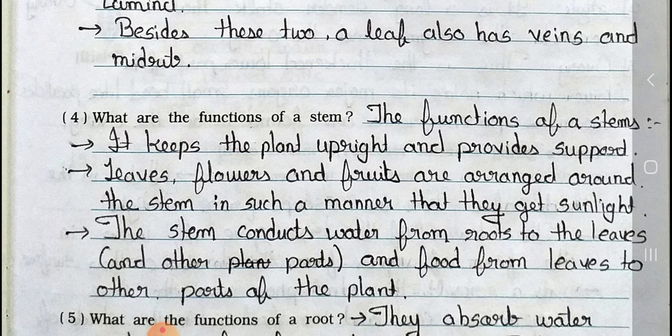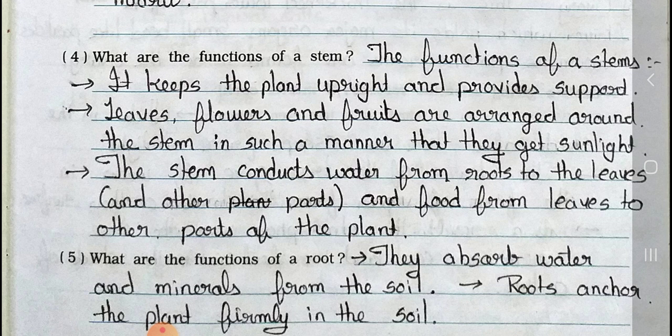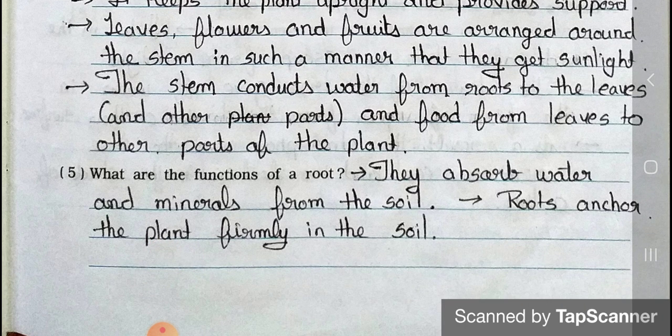Question 4: What are the functions of a stem? Answer: The functions of a stem are as follows — it keeps the plant upright and provides support; leaves, flowers, and fruits are arranged around the stem so that they get sunlight; the stem conducts water from roots to the leaves and other parts, and food from leaves to other parts of the plant. Question 5: What are the functions of a root? Answer: They absorb water and minerals from the soil; roots anchor the plant firmly in the soil.